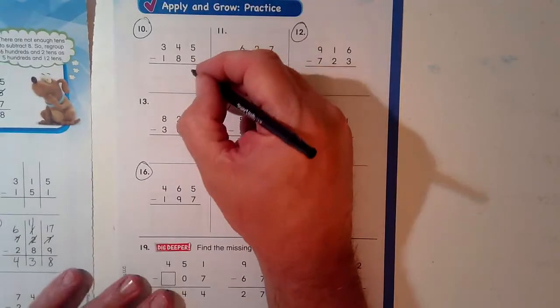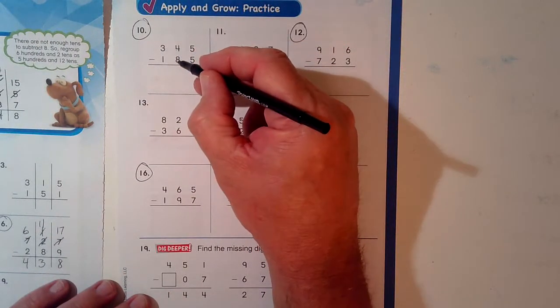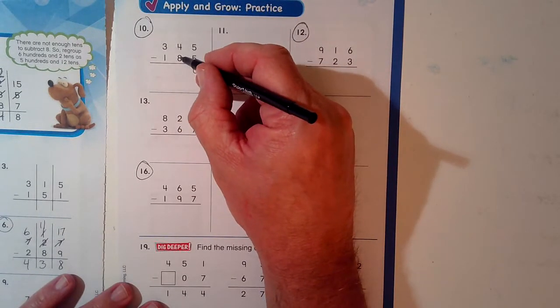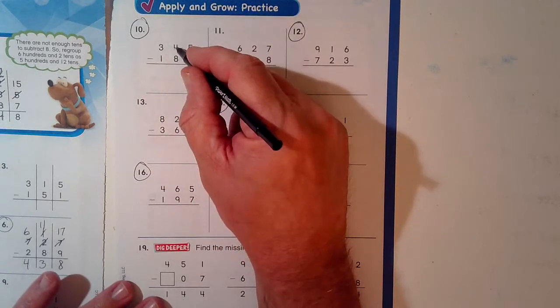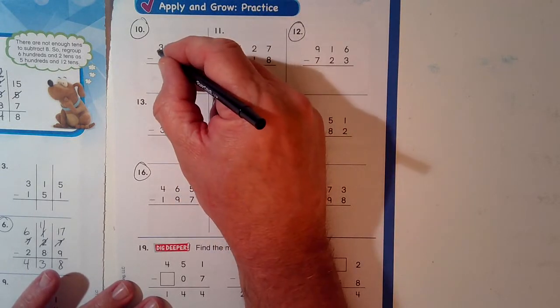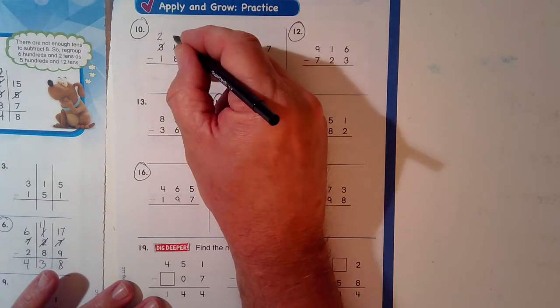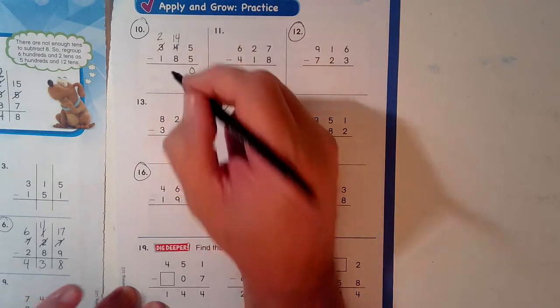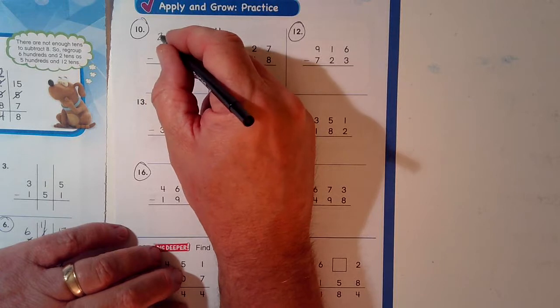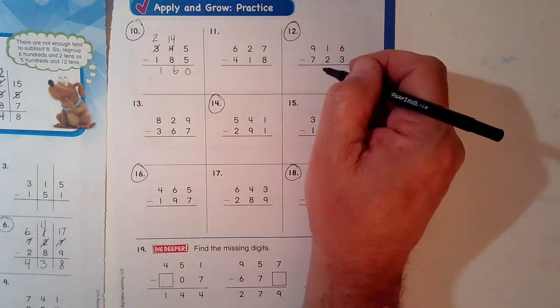5 take away 5, can I do it? Yep. There's nothing left. 4 take away 8, I cannot. Don't make the mistake and think 4 minus 8 is 4. No. That's 8 minus 4, not 4 minus 8. So I need to take one of these and put it with this 4. It's 14. 14 minus 8 is 6. 2, right? Because I took 1 away. 2 minus 1 is 1.